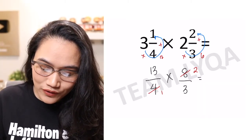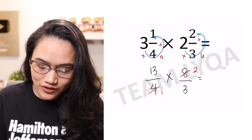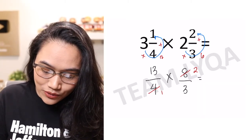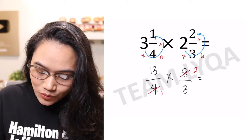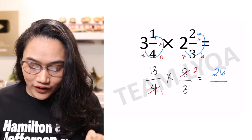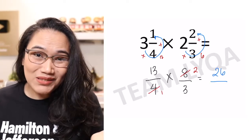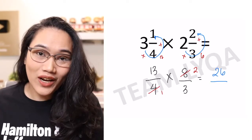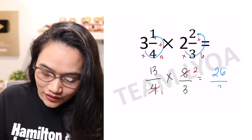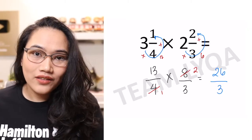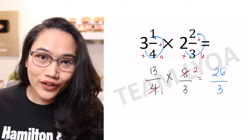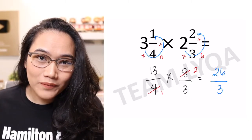So we're just going to solve it across. 13 times 2 is 26, over 1 times 3 — the 4 was cancelled earlier — which is 3. The answer is 26 over 3.